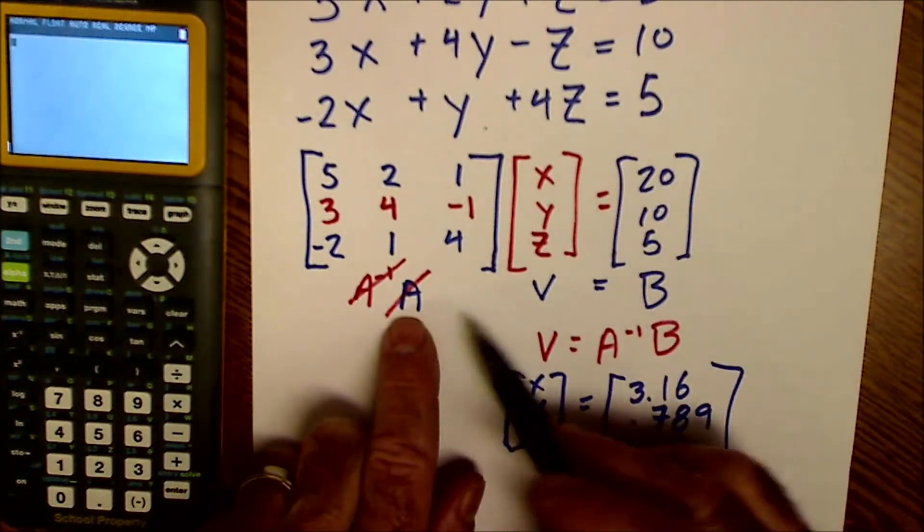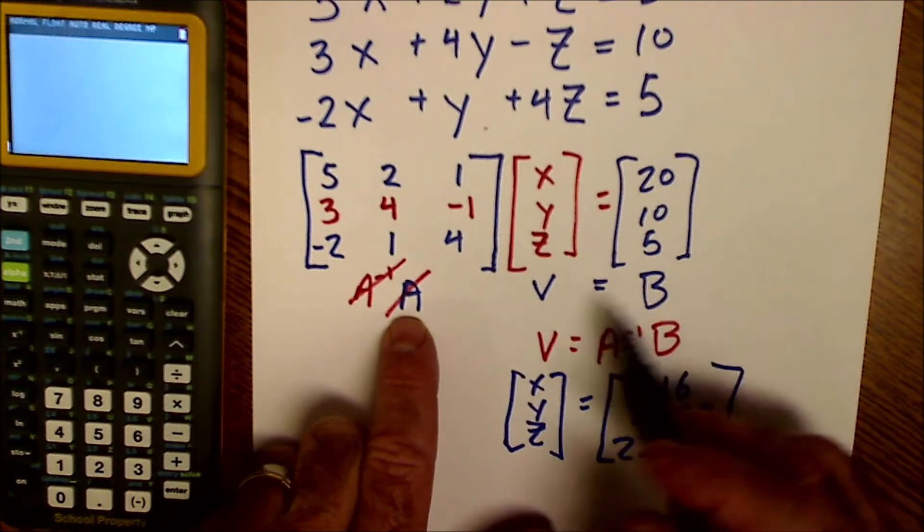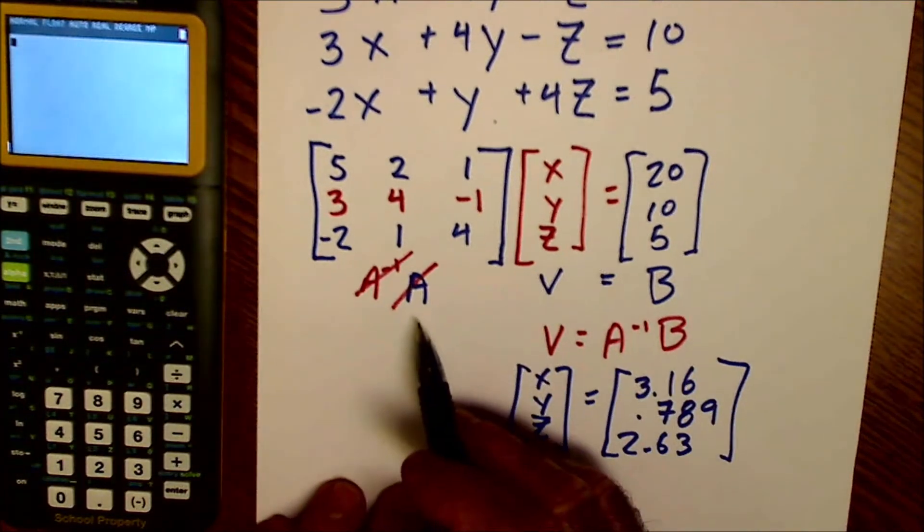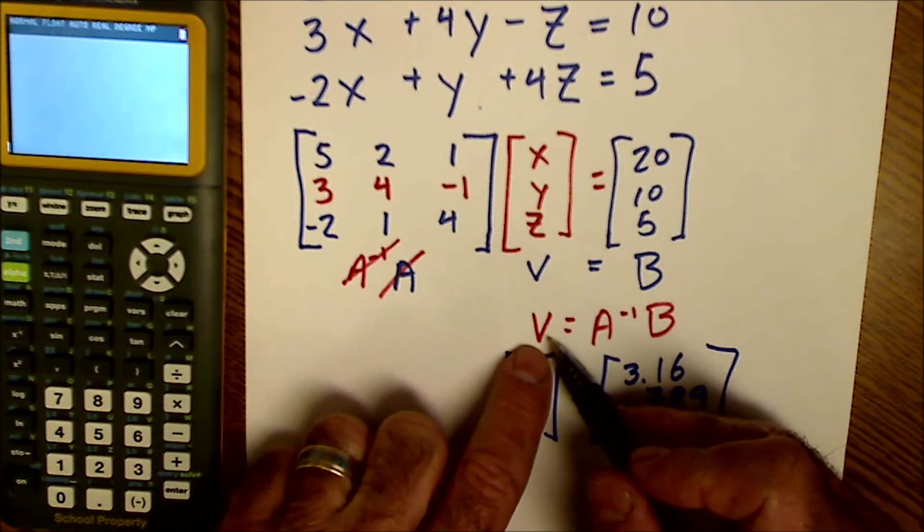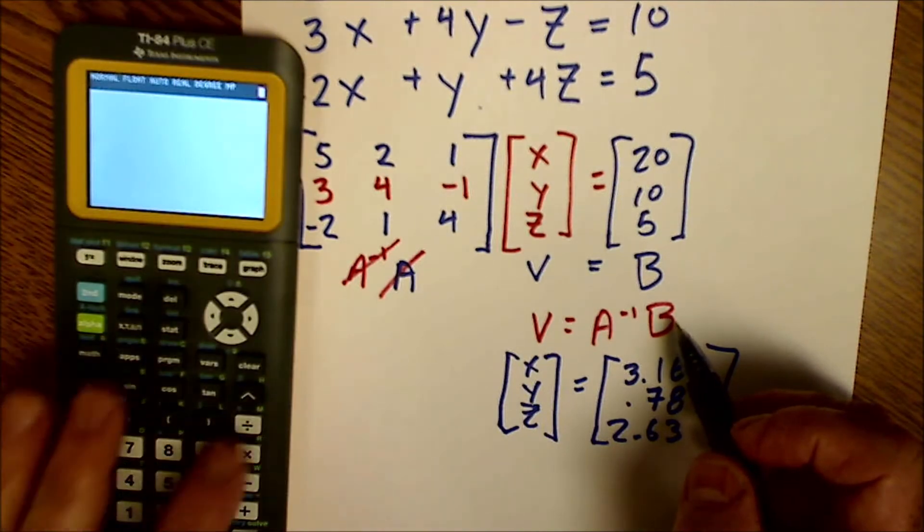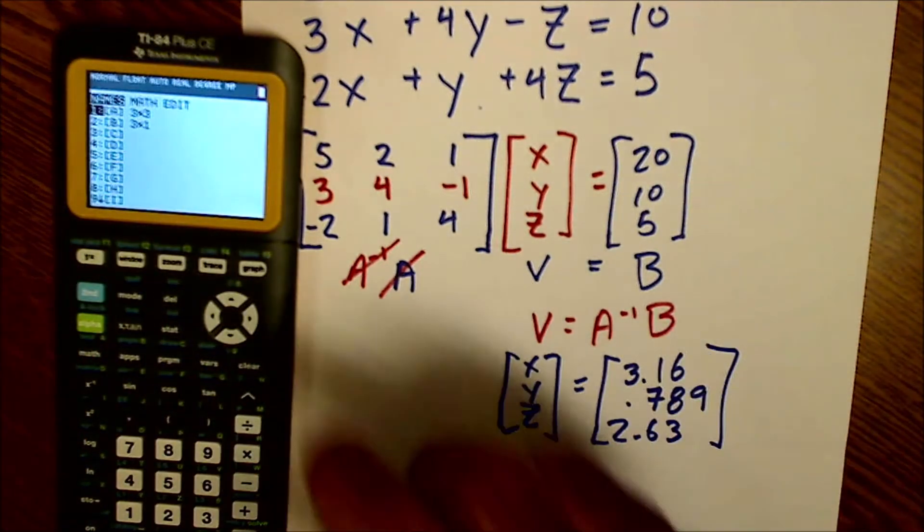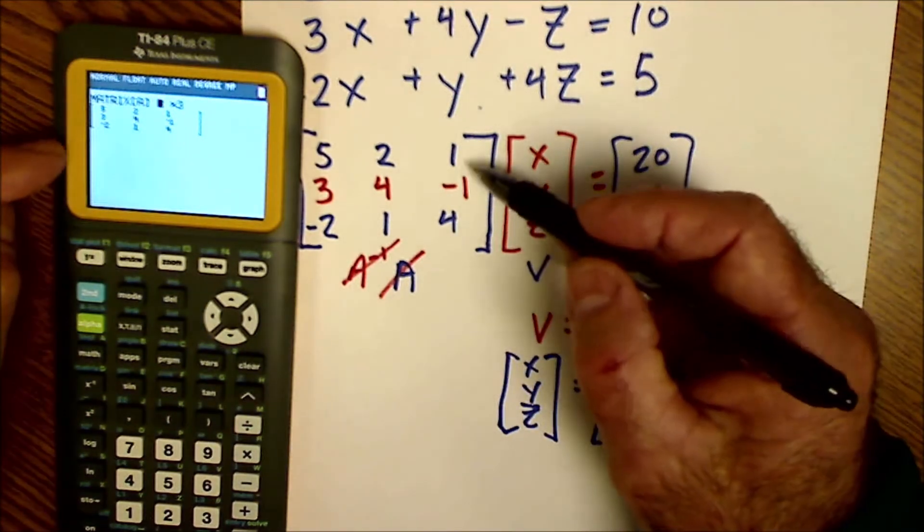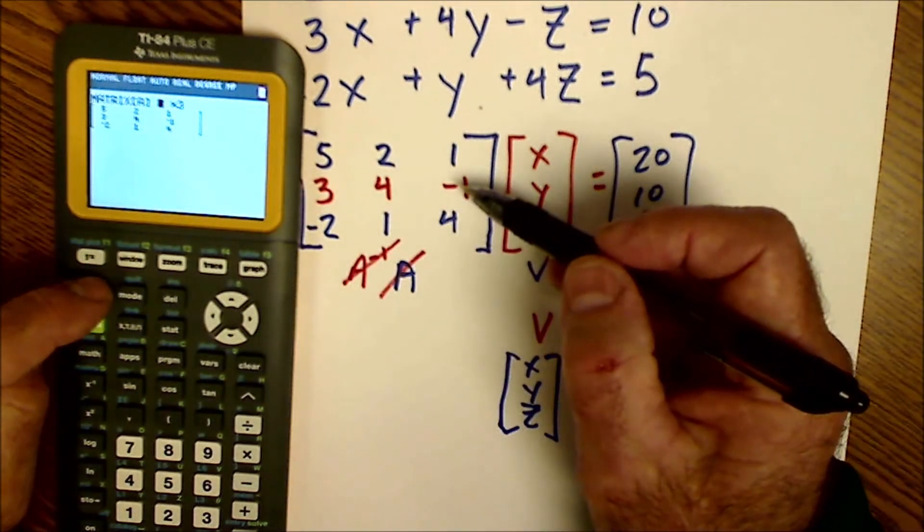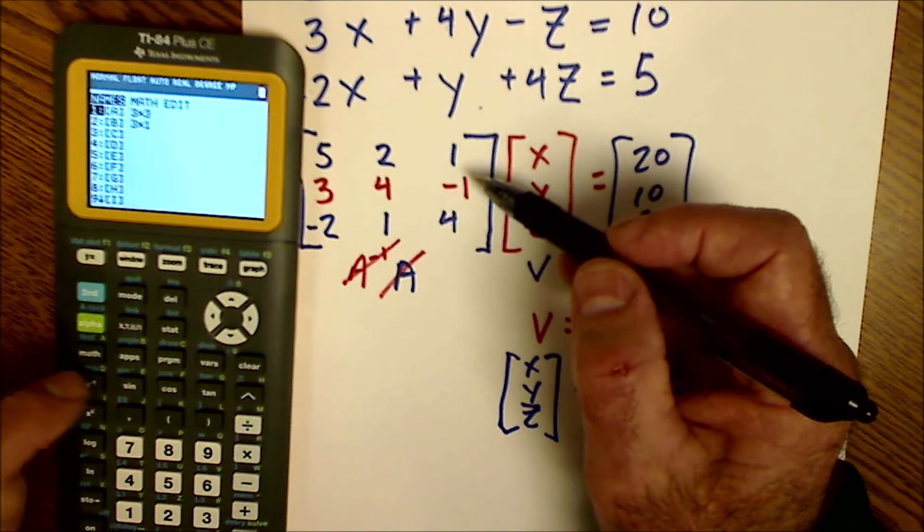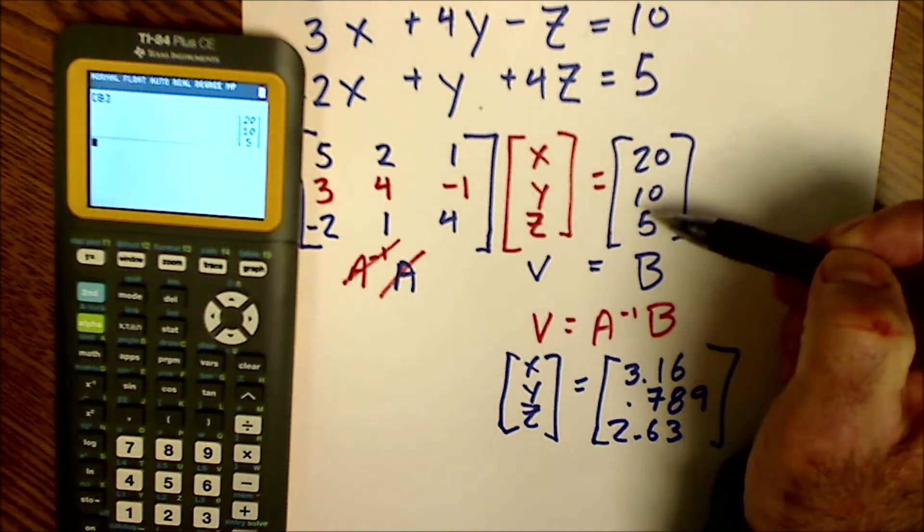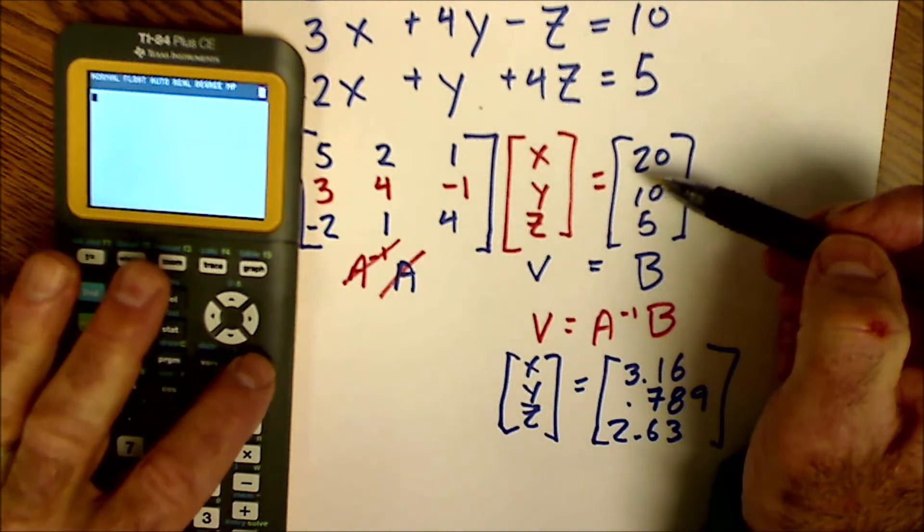Then in blue here, I have A times V equals B. If I want to get V by itself, I'm going to multiply A by the inverse of A. Those will cancel. If I do that to the left side of the equation, I also do it to the right side. So my variable matrix is equal to the inverse of A times B. Then on my calculator, I'm going to go to matrix. I'm going to edit them. So I'll go over to edit, hit enter. I'm going to enter that three by three, five, two, one, so forth. Once I have matrix A entered, I'll quit. I'll go back to matrix. I'll scroll down to number two and hit enter. And I entered that as 20, 10, and five.